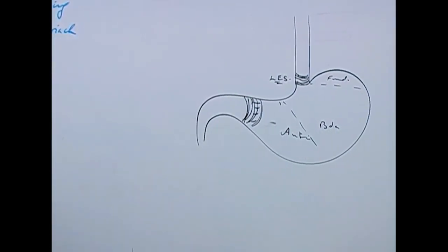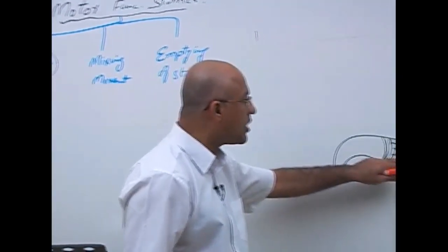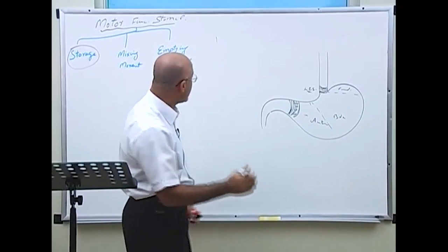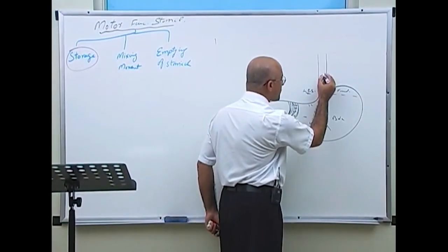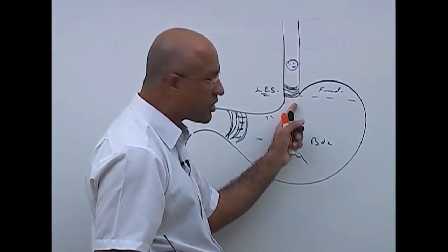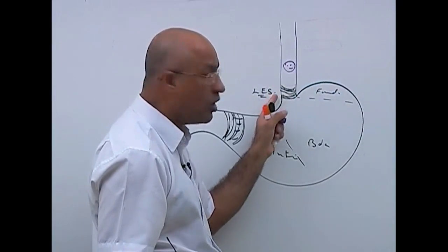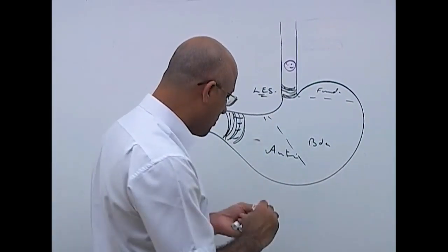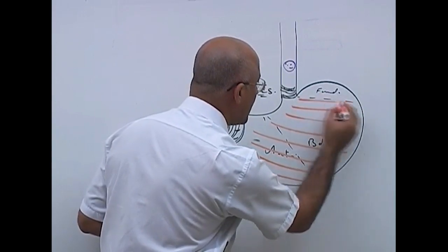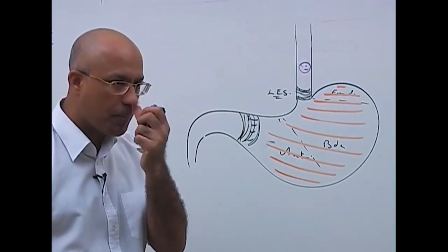When we are eating, food is initially stored in the stomach so that it can be gradually released as it is processed by the small intestine through secretion and absorption. For storage, when food comes from the esophagus, stimulation through the myenteric plexus causes the upper part of the stomach to undergo receptive relaxation. As more and more food comes in, the stomach keeps on relaxing — this second type is called accommodative relaxation.